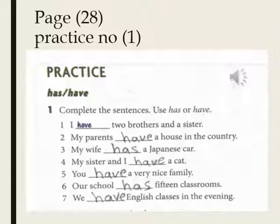Okay students, this is exercise number one on page 28 — صفحة ثمانية وعشرين، التمرين رقم واحد. Complete the sentences using has or have. Read the sentences and decide whether you should put has or have. How to decide? Read the sentence, decide whether it is plural or singular, and see whether the pronouns used go with have or with has. يعني اقرأ الجملة، اعرف هل هي مفرد أو جمع، وانظر إلى الضمائر الموجودة.